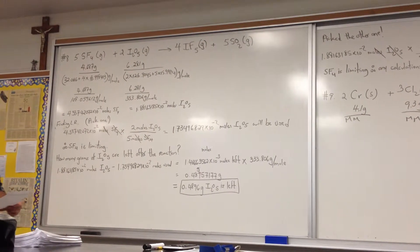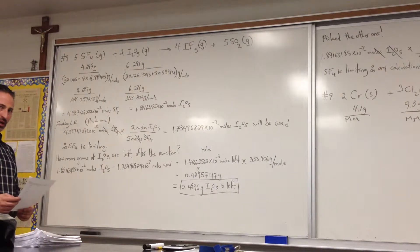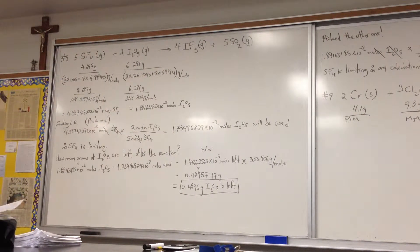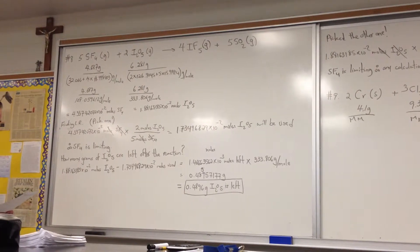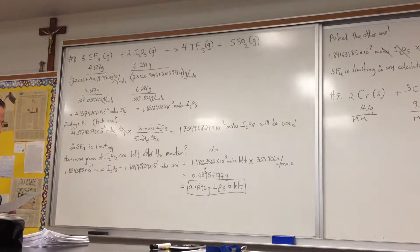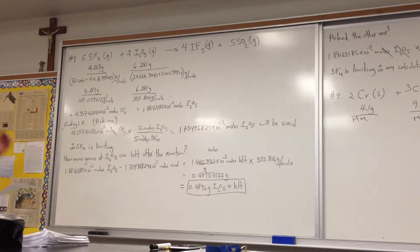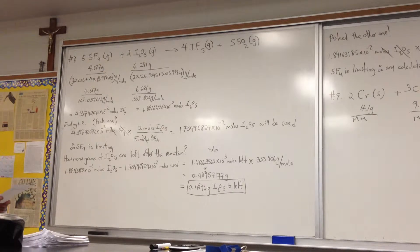We're doing number 8 of the stoichiometry problems. The question says: identify the limiting reactant when 4.687 grams of sulfur tetrafluoride reacts with 6.281 grams of diiodine pentoxide to produce iodine pentafluoride and sulfur dioxide.